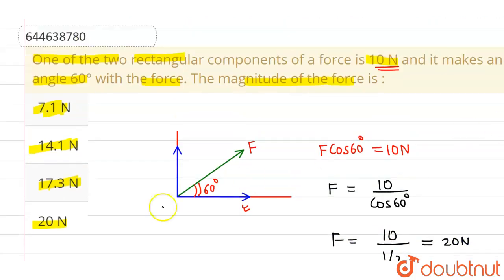So the correct option is option 4 which is 20 newton and rest all options are incorrect. I hope you understood.